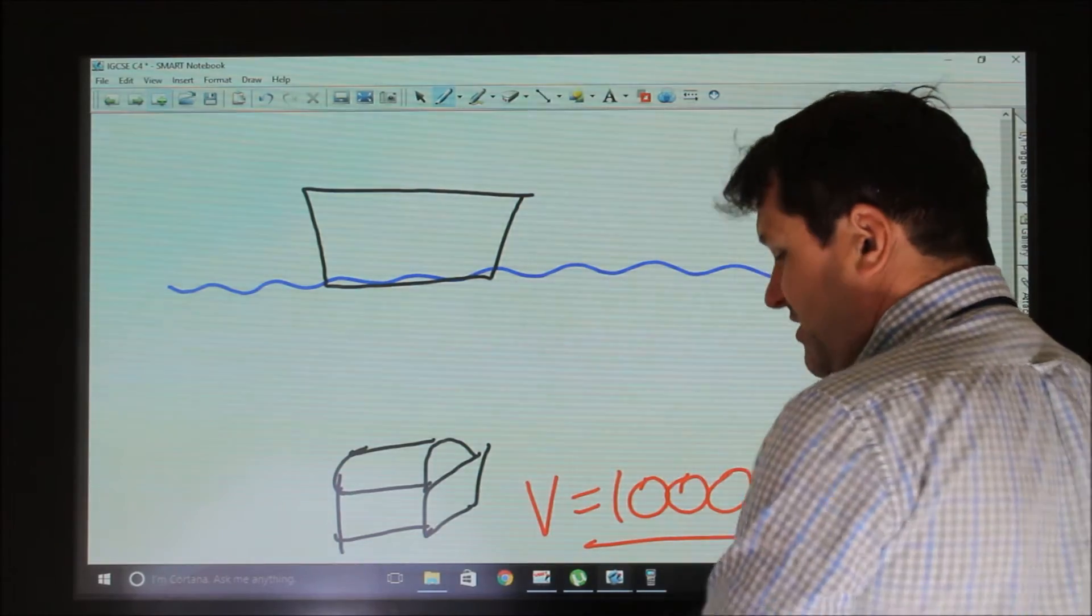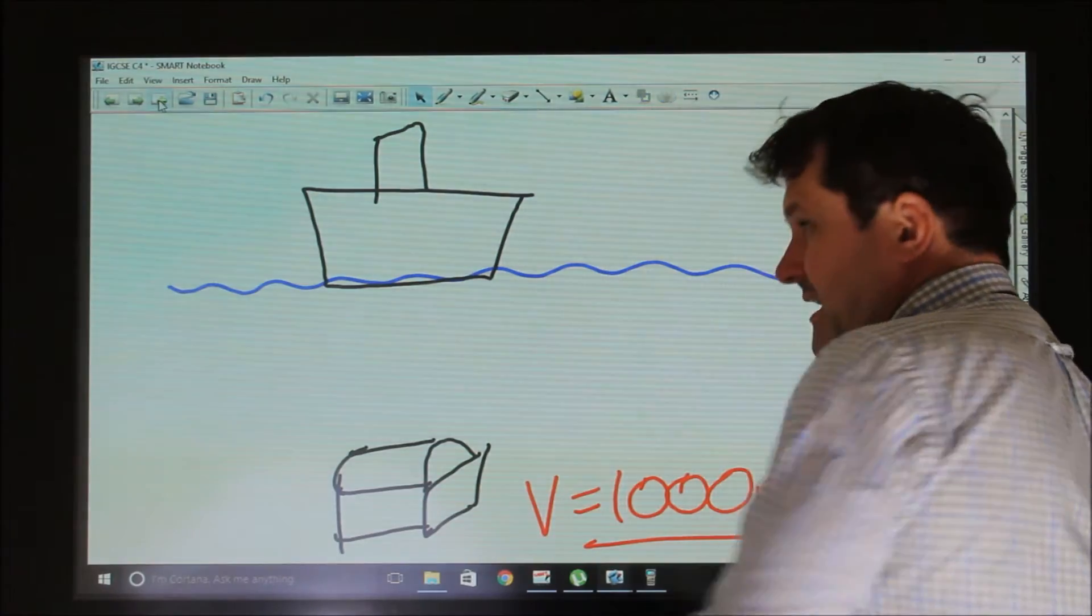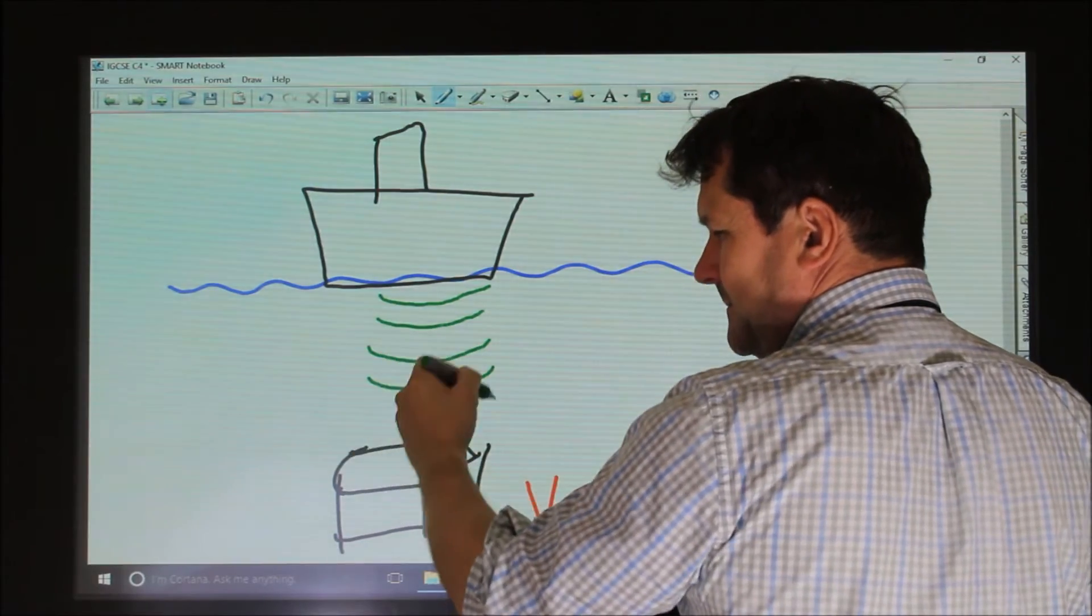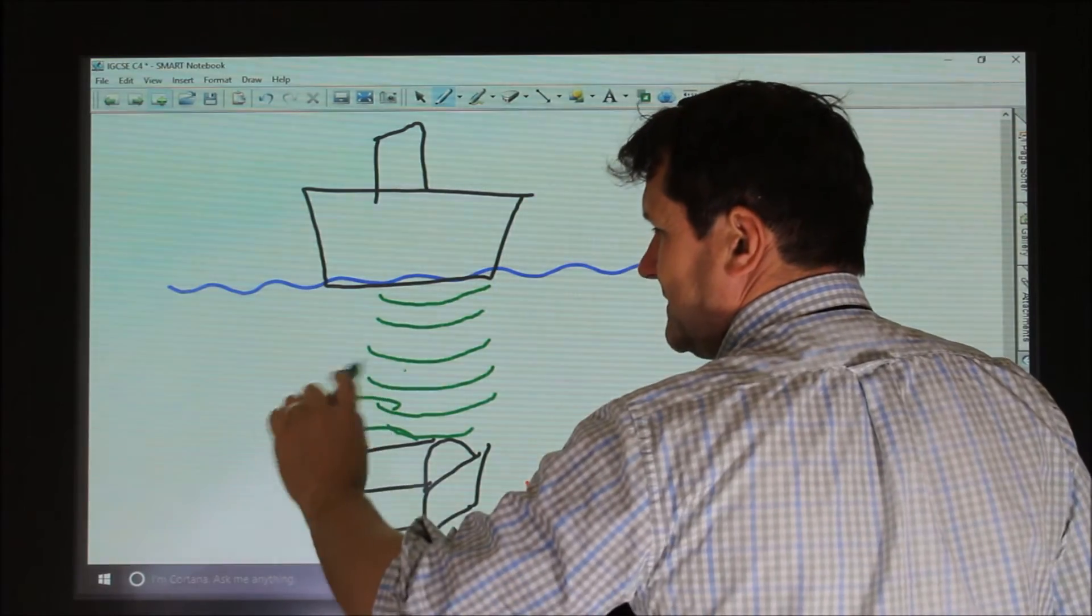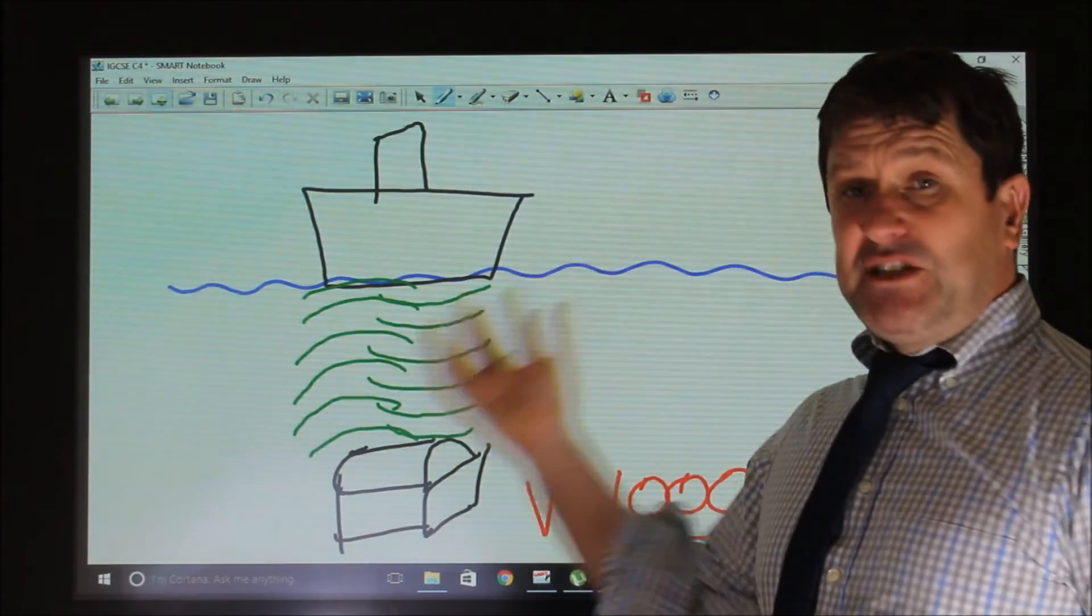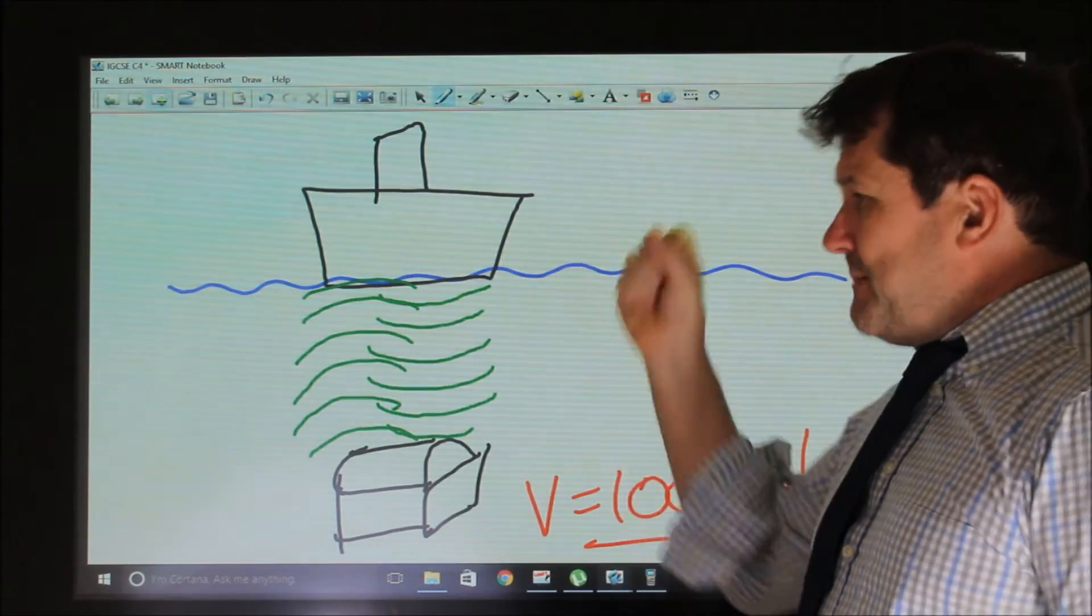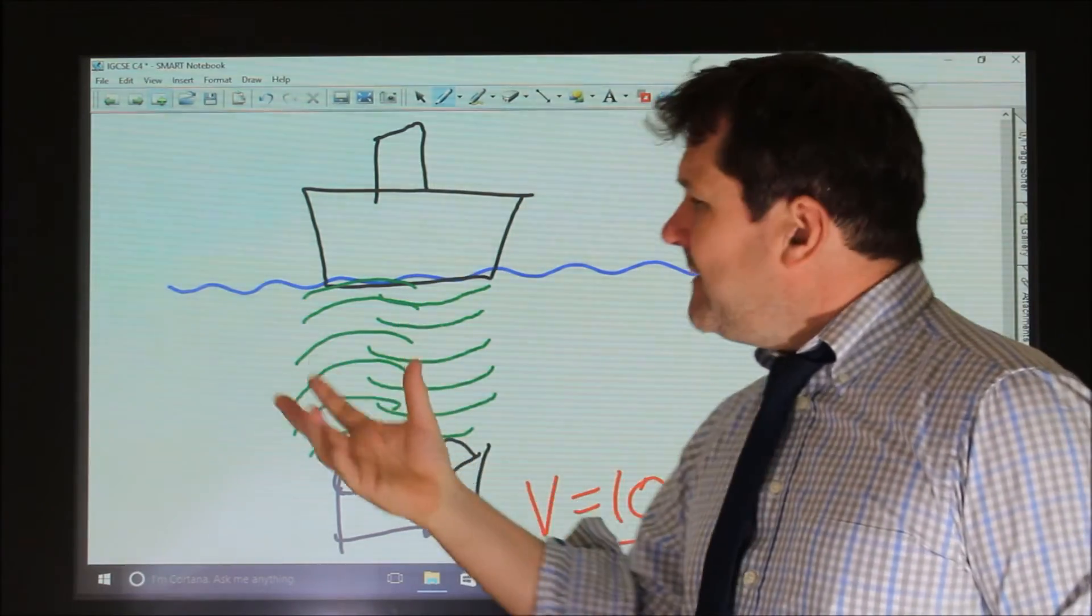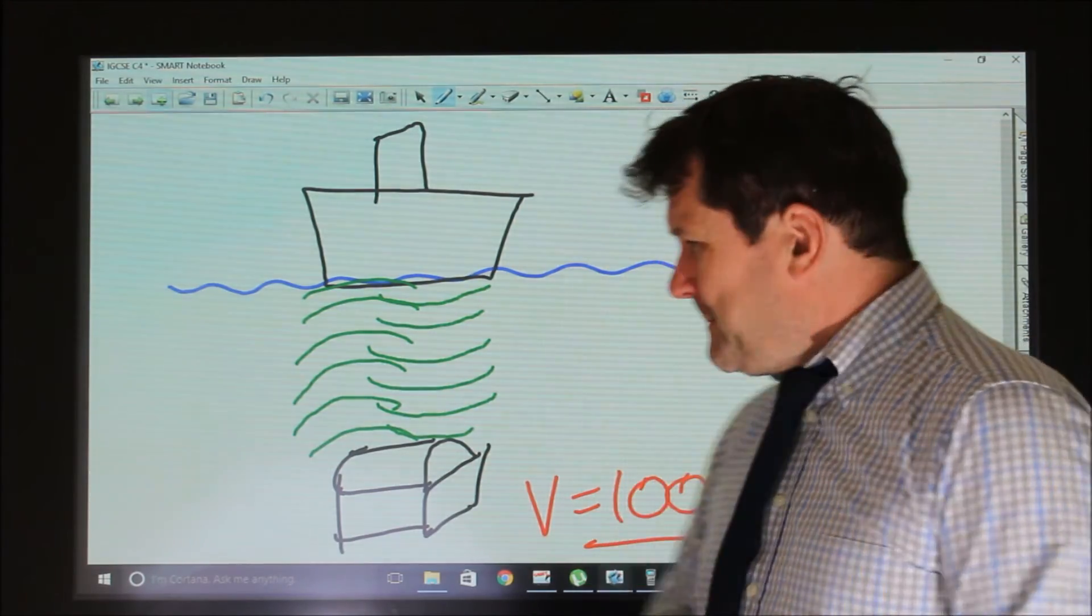Now, in echolocation, if we have a ship, a ship might create a sound wave. And the sound wave would pass through the water and it would hit the object, or hit the bottom, and it would reflect back again. And this reflected sound wave could be picked up by the ship. And this could be used to determine the depth of the water. So it makes a sound, it waits for the echo, and by knowing the speed of sound in water and how long it takes to return, they can work out the depth of the object or the depth of the ocean floor.